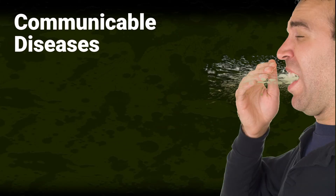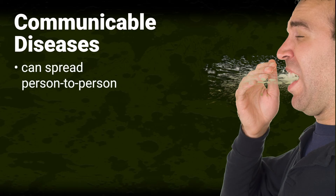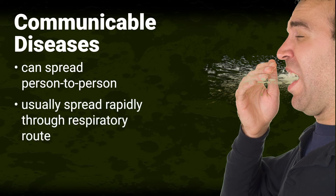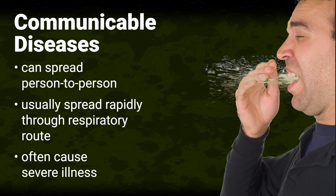Communicable diseases can spread directly person to person, or from animal to human, or from an inanimate object, such as a doorknob or tabletop, to an individual. When an infected person coughs or sneezes, germs spread through droplets in the air and can be breathed into the lungs. Diseases transmitted this way usually spread rapidly through the respiratory route and often cause severe illness. Sexually transmitted diseases spread through infected mucous membranes in the genitals, mouth, and anus.